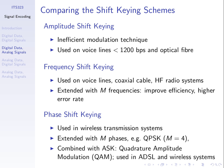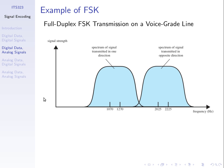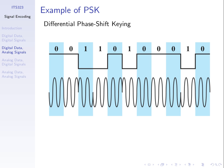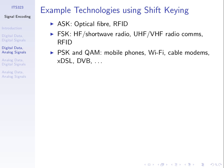To summarize: amplitude shift keying is used in optical fiber; frequency shift keying in telephone lines, coaxial cable, radio, and wireless systems; and phase shift keying and QAM (combining phase and amplitude shift keying) are used in Wi-Fi, cable modems, and DSL technologies. Those are the basics of how we can send bits as analogue signals — vary the amplitude, phase, or frequency.